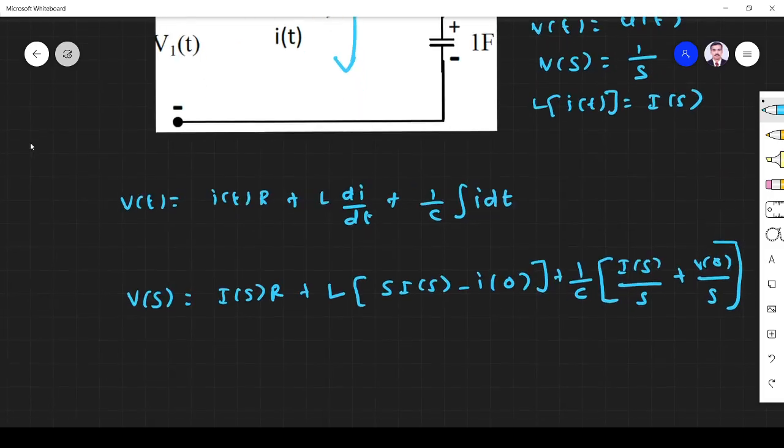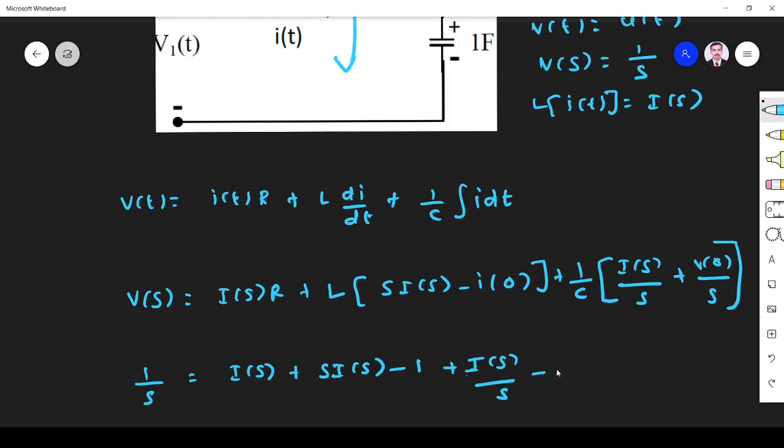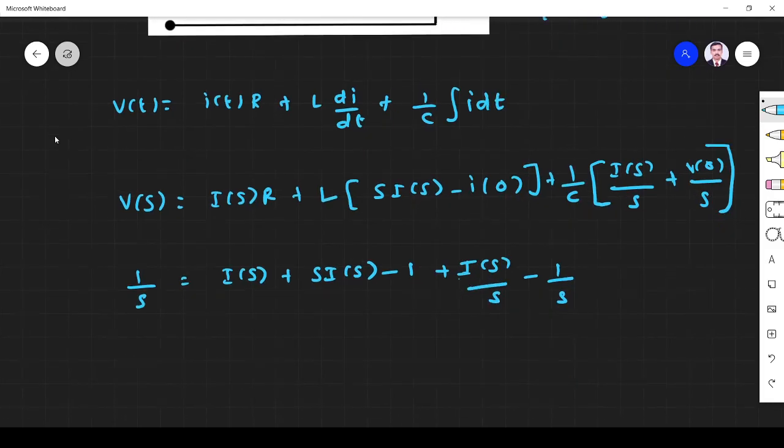R, L, C is 1. So R is 1, so it is I(s). L is 1, so it is sI(s). I(0) is 1 ampere plus 1/C, so it is 1 only. I(s)/s. V(0) is -1 initial condition. So it is 0. Now you see it will be 1 and 1 plus -1/s.